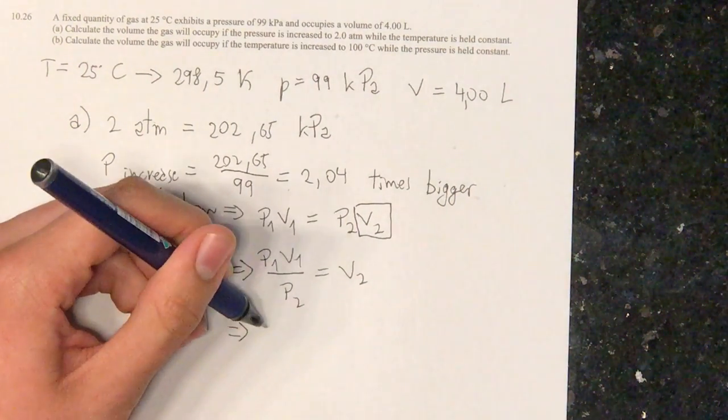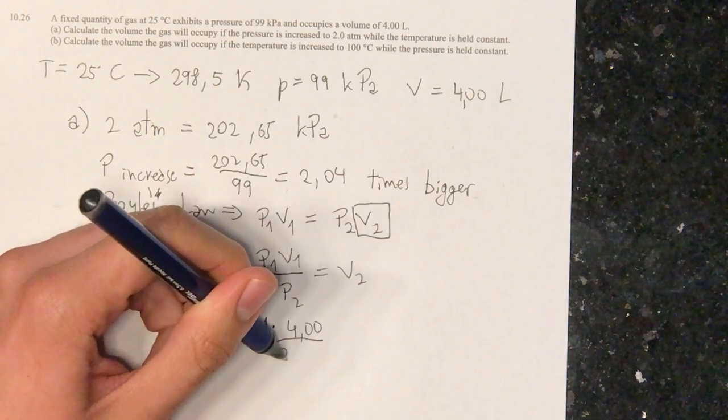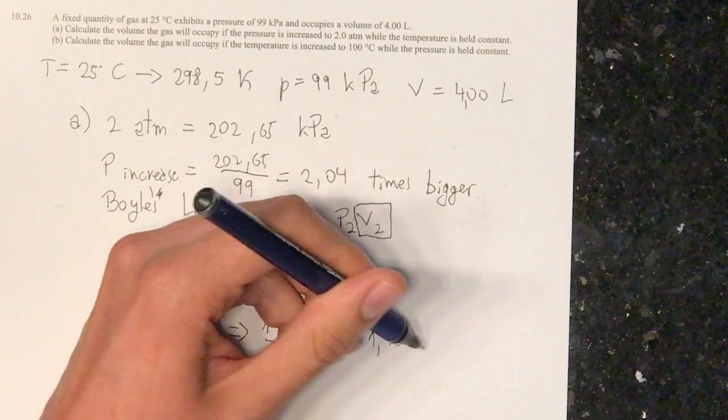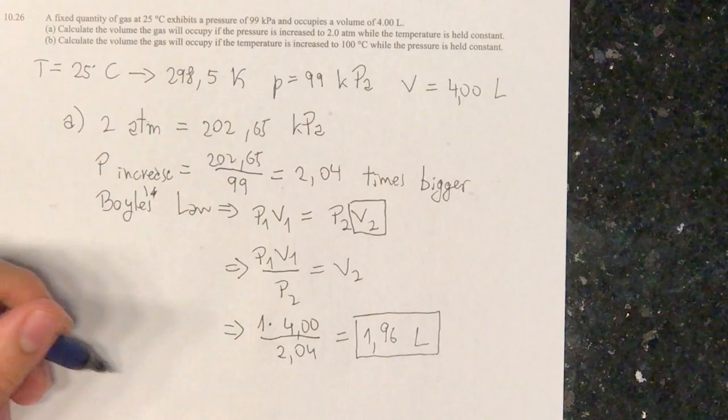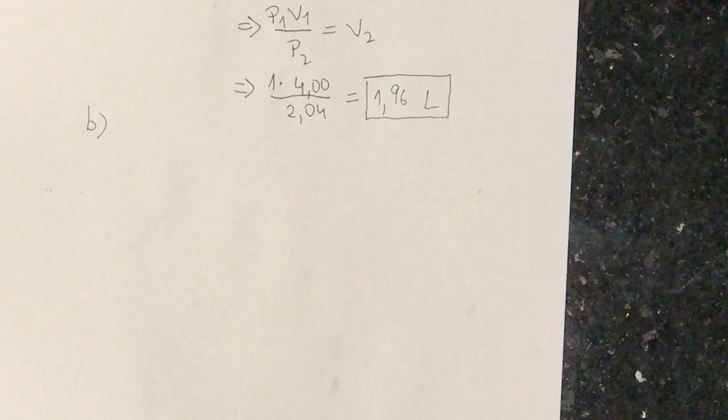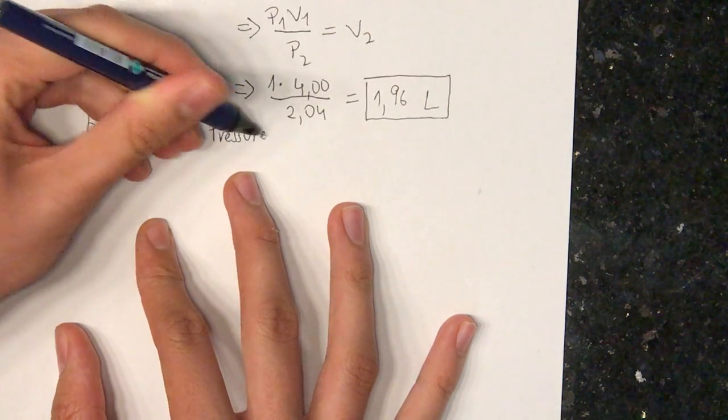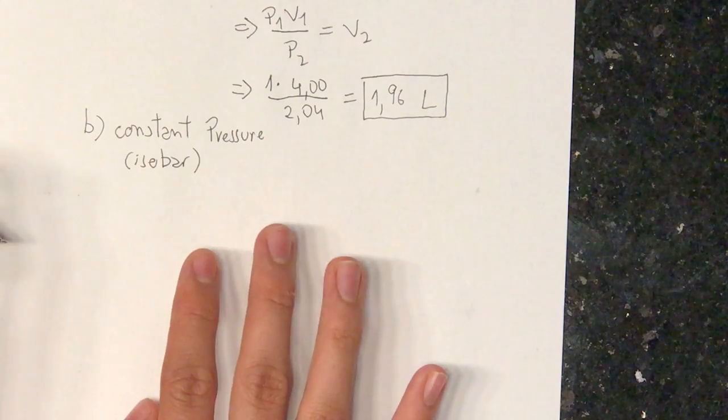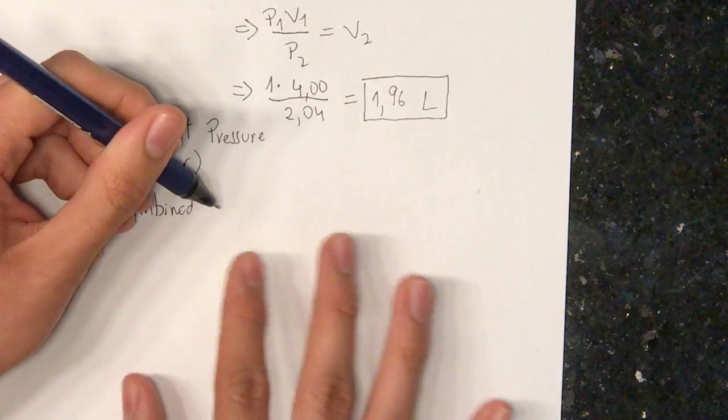When we replace the values we have 1 times 4 divided by 2.04 and that gives us 1.96 liters. That's our end volume for our ideal gas. In Part B we have a constant pressure which is also called isobar, for iso equal and bar pressure. In this case we are going to use the combined gas law.